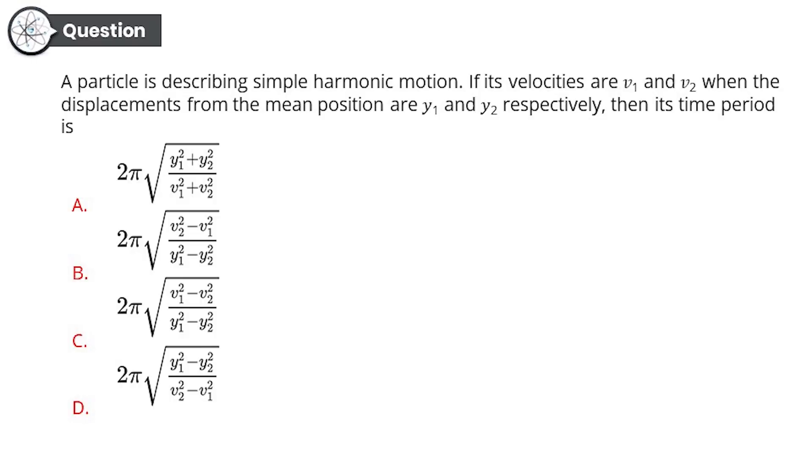Option A: 2π√[(Y₁² + Y₂²)/(V₁² + V₂²)]. Option B: 2π√[(V₂² - V₁²)/(Y₁² - Y₂²)]. Option C: 2π√[(V₁² - V₂²)/(Y₁² - Y₂²)]. And finally, option D: 2π√[(Y₁² - Y₂²)/(V₂² - V₁²)]. Now I have no idea why every option is like this, being confusing between P and M in the previous question and here Y's and V's. I really feel sorry for you guys, but you know, at the end, it's always beautiful.